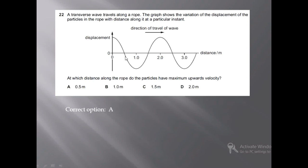The second condition is that the velocity should be acting upwards. These are the two guiding principles. The two points where it is moving upwards are at 2.5 and 0.5. Velocity is maximum at both points, but 2.5 is not in the options — only 0.5 is. So option A is correct. Students, if you have any problem, you can contact me.